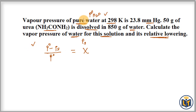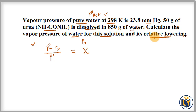Here, p-naught is the vapor pressure of water in its pure state and ps is the vapor pressure of the solution. x is the mole fraction. According to Raoult's Law, the vapor pressure of solvent in its pure state is always greater than the vapor pressure of the solution. We need to plug in values — p-naught is already given, and we need to calculate ps.